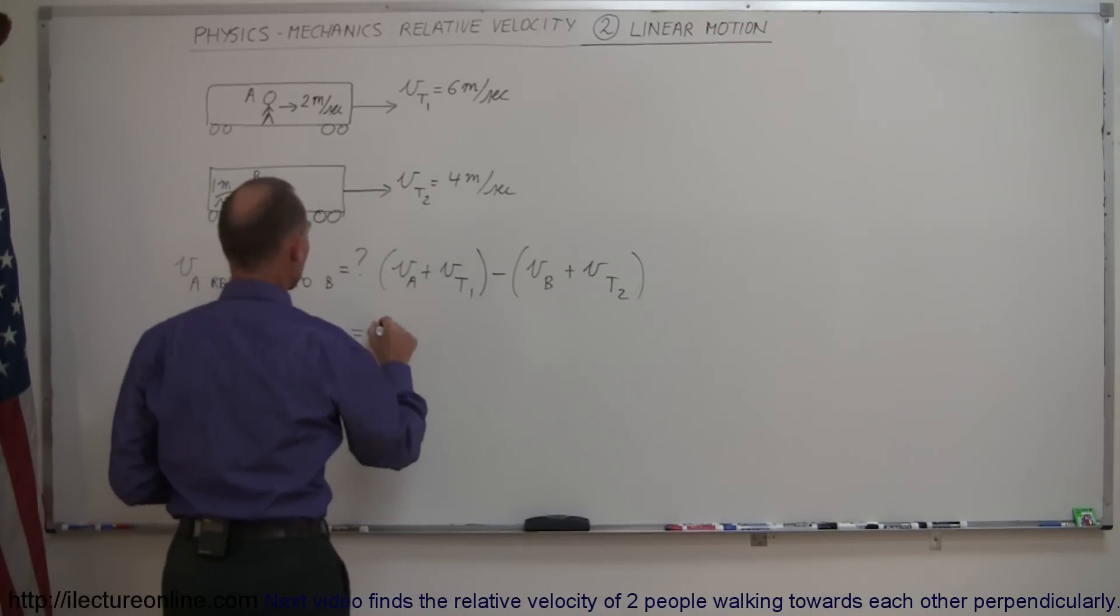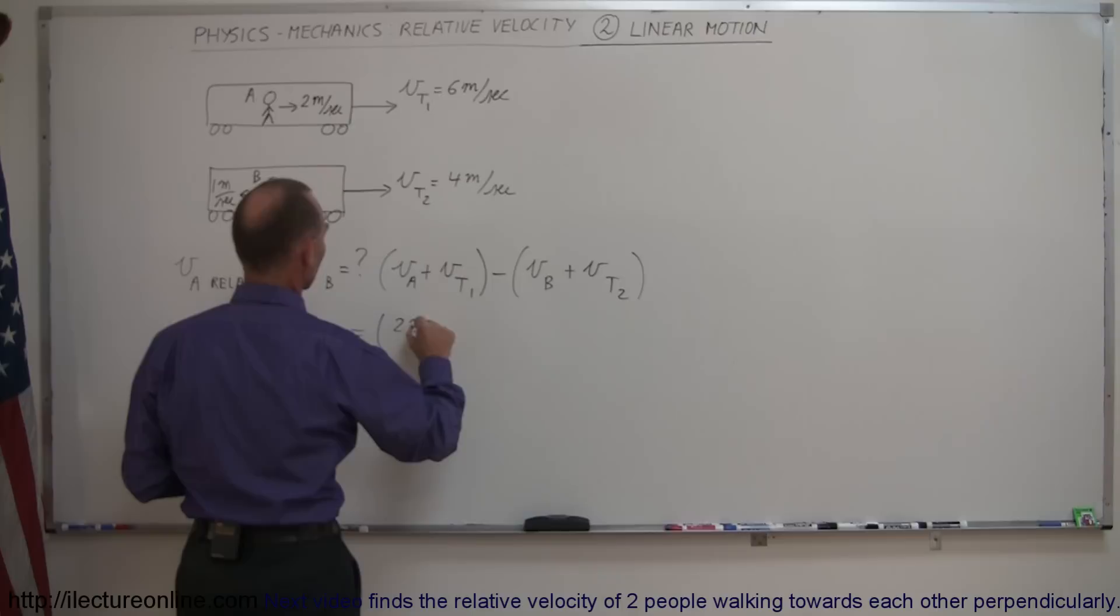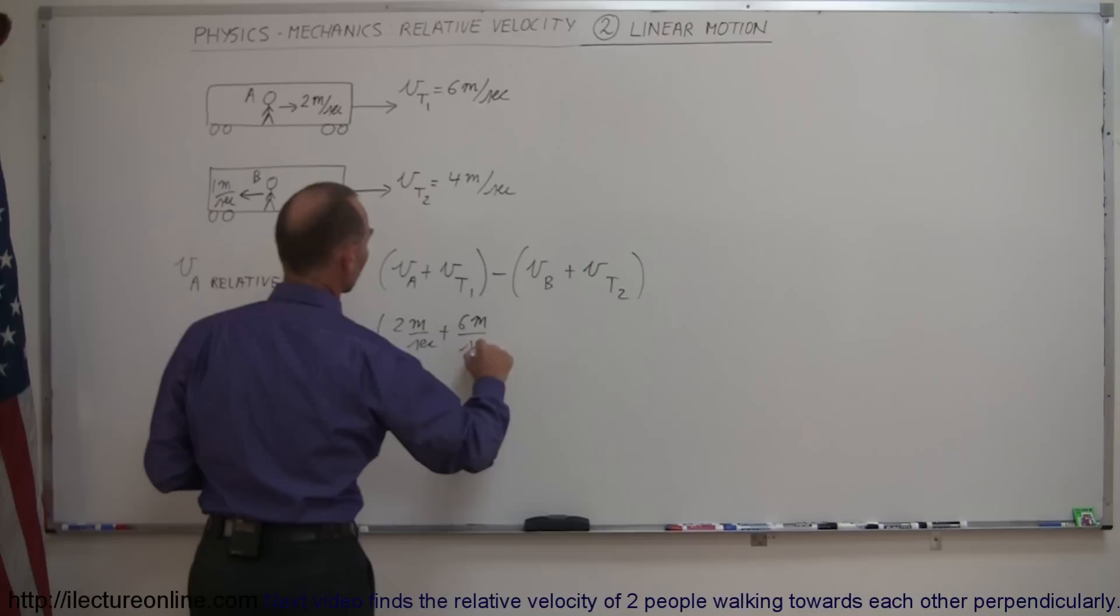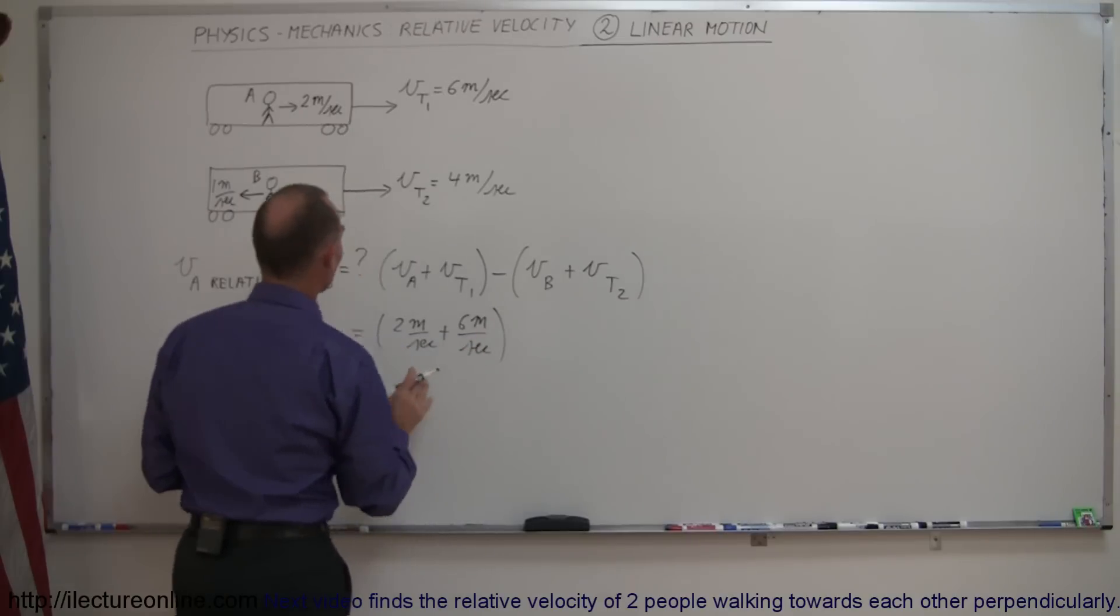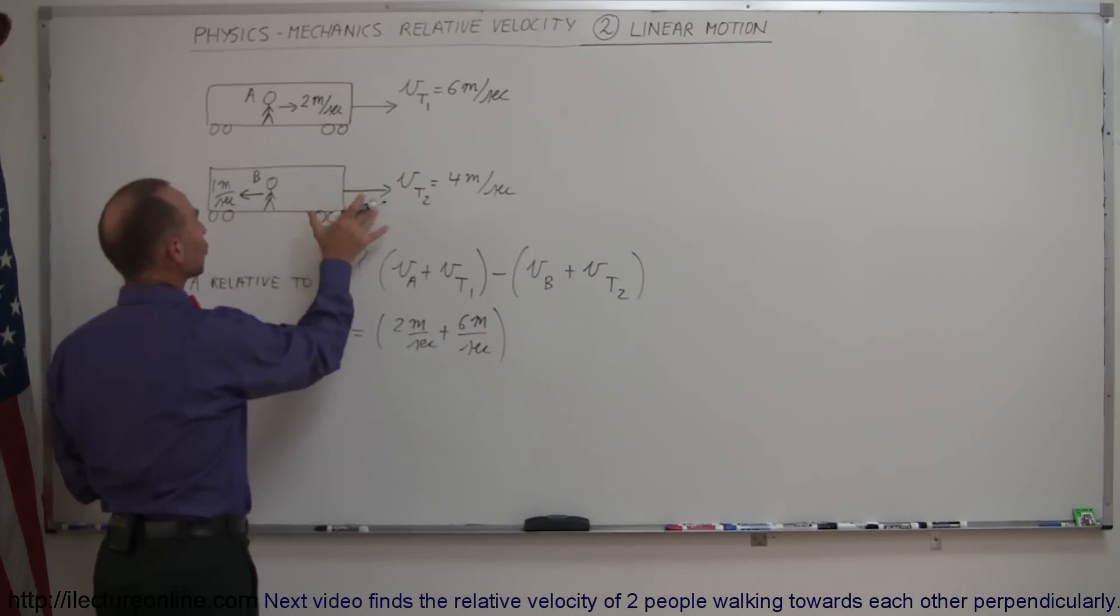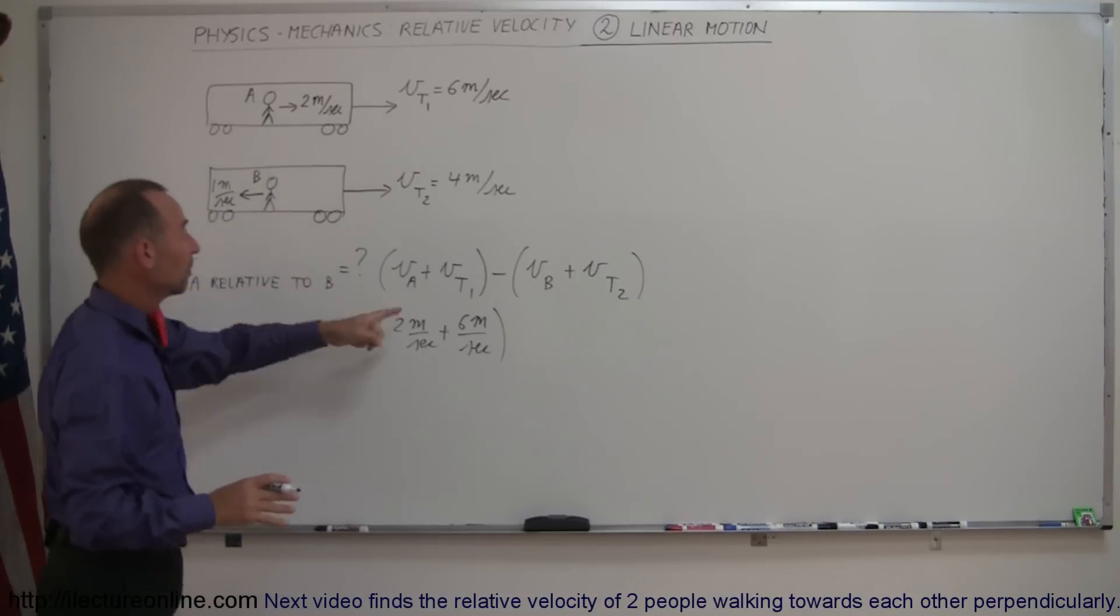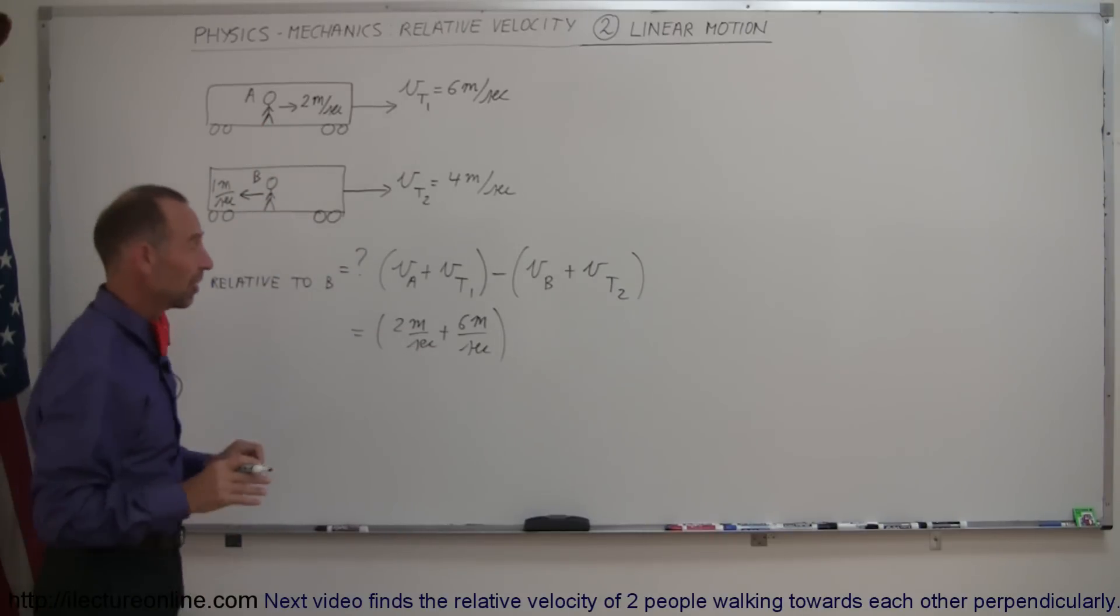So this is going to equal velocity A, which is to the right at 2 meters per second, plus velocity of the train to the right at 6 meters per second. Simply said, if B was not moving and the train that B is on was not moving, the velocity of A with respect to B would simply be 8 meters per second.